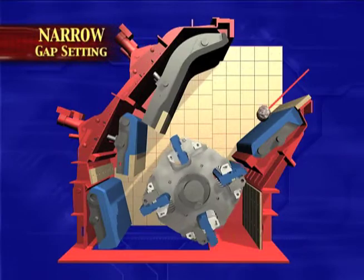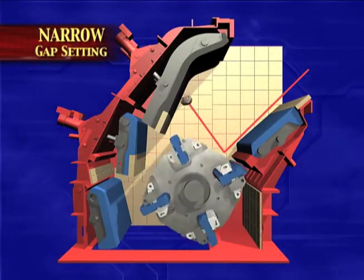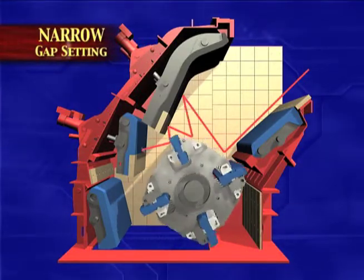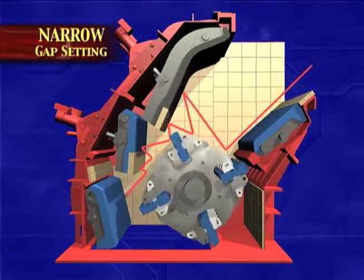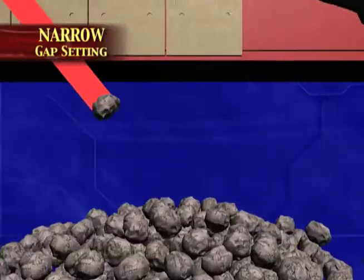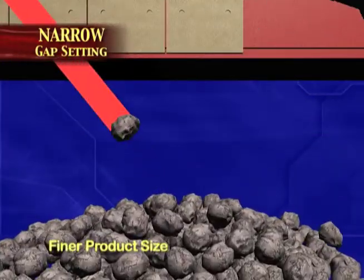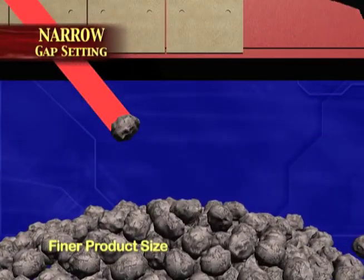A narrow gap setting reflects the material back to the turning rotor more times, resulting in a higher crushing degree and a finer product size.